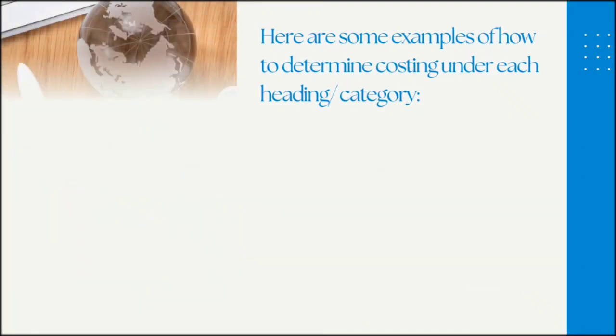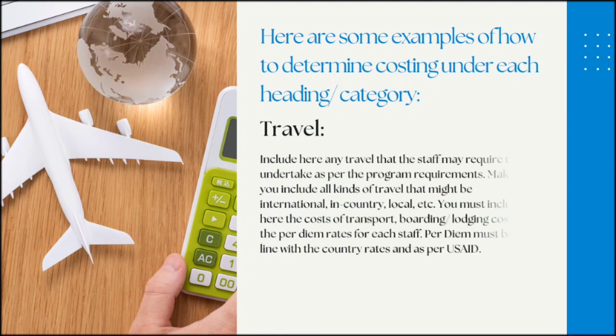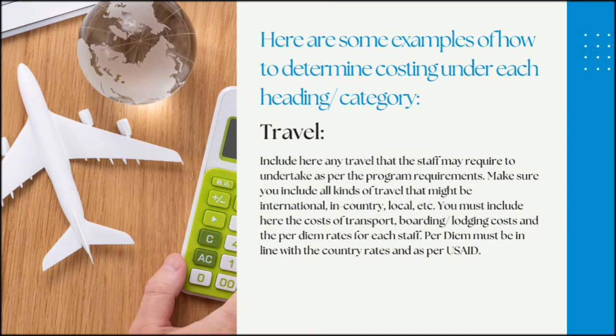Number three: Travel. Include here any travel that the staff may require to undertake as per the program requirements. Make sure you include all kinds of travel that might be international, in-country, local, etc. You must include the costs of transport, lodging costs, and the per diem rates for each staff. Per diem must be in line with the country rates and as per USAID.